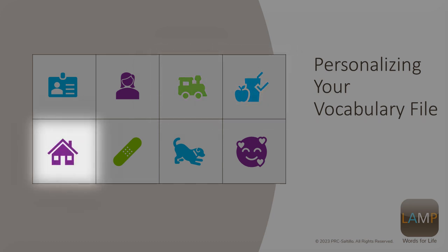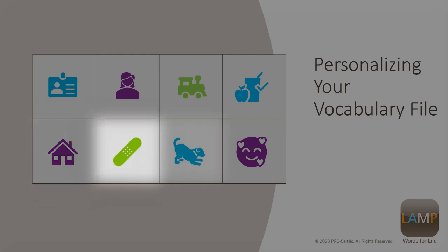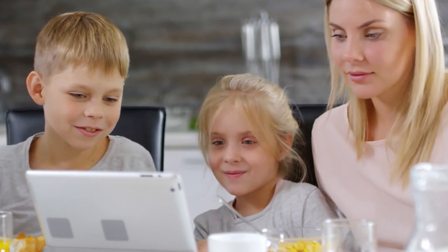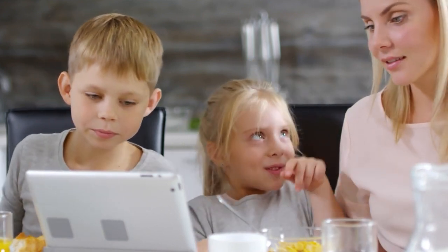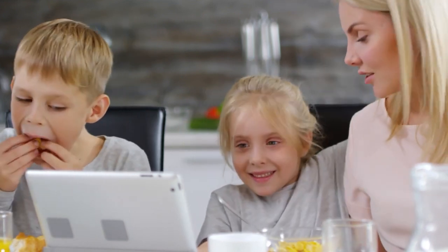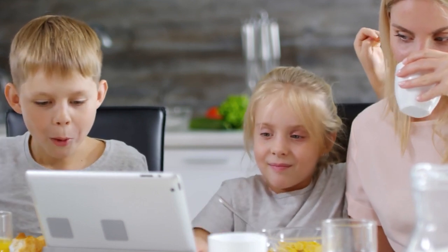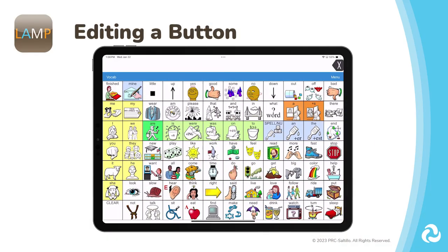Places that they go to, medical information, pets or favorite animals, or any other favorite things, places, people, or sayings. Having these words available can help motivate your AAC learner to be engaged in communicating about things that are important in their life or that they enjoy. Let's see how you can edit a button to start adding these into your vocabulary file.